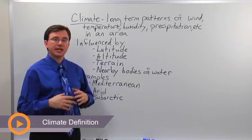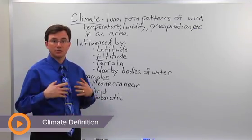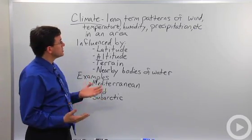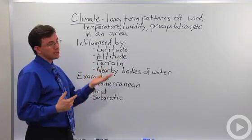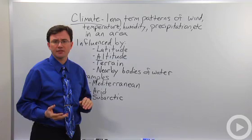In ecology, one measurement that's taken of a particular area is its climate. What climate is is the long-term patterns that you'll see in a particular area of wind, temperature, humidity, precipitation, and other things like that.